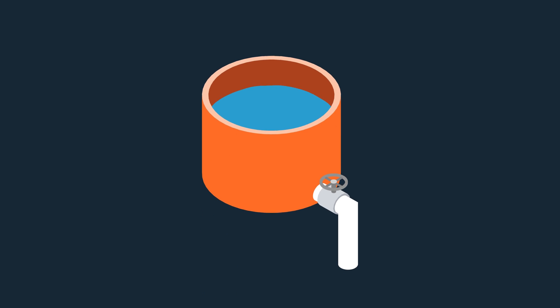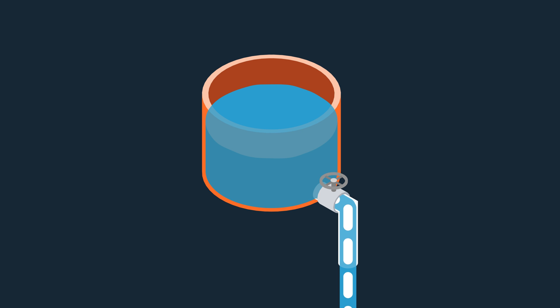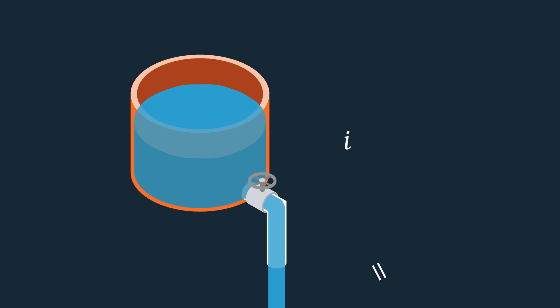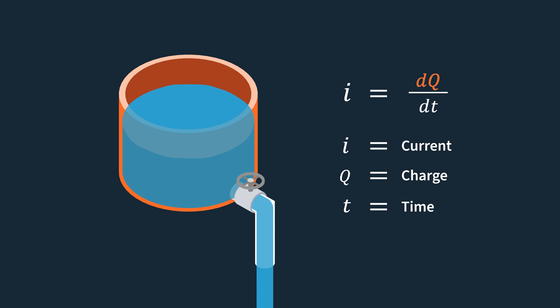Now that we've explored voltage as an electrical potential energy analogous to water held above the ground, let's delve into current. Returning to our water tank analogy, imagine the water is held in place by a valve. The water has its own energy, just as voltage exists even when charges are not in motion. When we open the valve, allowing water to flow, this represents current — more precisely, the volume of water passing through a specific point. In electrical circuits, current represents the rate of flow of electric charge, expressed as i equals dq over dt, where i is current, q is charge, and t is time. We're essentially measuring the flow of charge over time, where dq is the change in charge over a time interval dt.